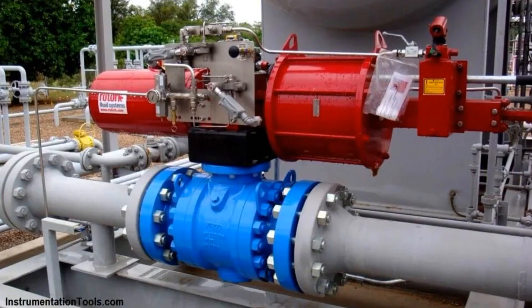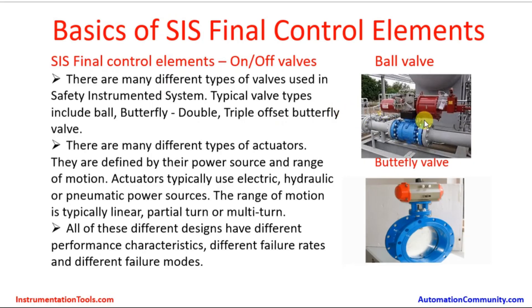Regarding on-off valves, there are many different types of valves used in the safety instrumented system. Typical valve types include ball valves, butterfly valves — including double and triple offset butterfly valves. Here we see two pictures: one is a ball valve fitted with an actuator connected to the process pipe, with a pneumatic assembly including solenoid valve, instrument air filter regulator, etc., mounted with a double-acting actuator. The bottom picture shows a butterfly valve with an actuator, where the disc moves against the pneumatic force.